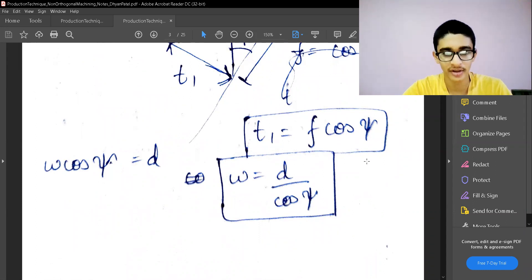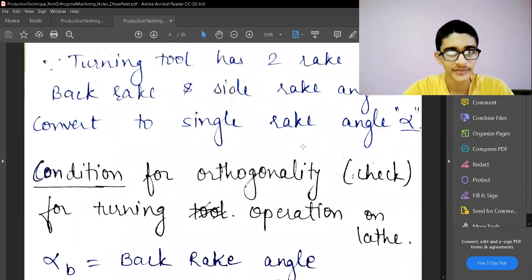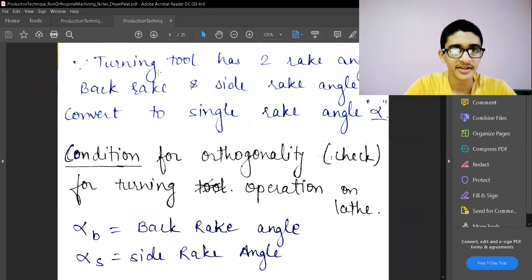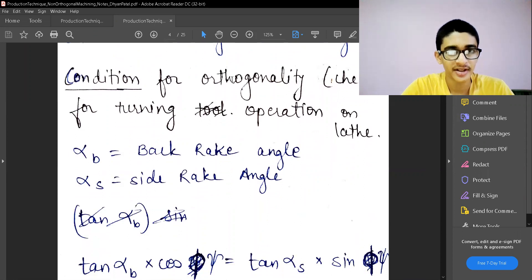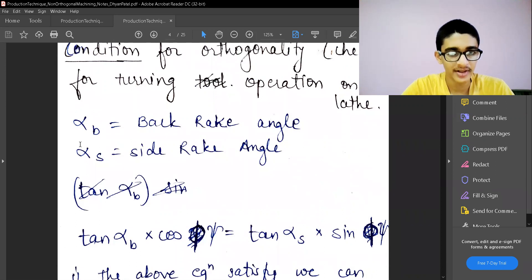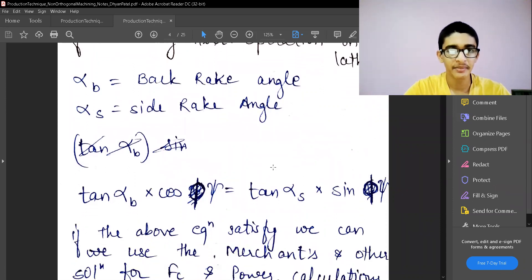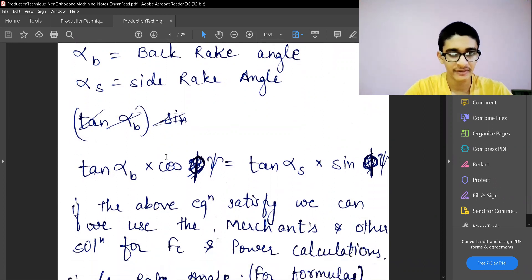These are the same relations I mentioned earlier in the last video about shaping and planning operations. This will obviously remain the same for all non-orthogonal machining processes. Now, the orthogonal tool has two rake angles: back rake angle and side rake angle, and we need to convert it to a single rake angle alpha. We have two angles - alpha_b which is the back rake angle and alpha_s which is the side rake angle.